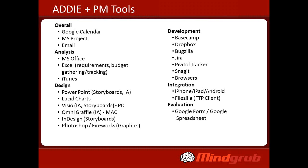You guys probably know the different parts of ADDIE. In the software development world, we use a software development cycle — analysis, information architecture, and design. Graphic design is a separate step. Then development, then implementation if it has to go to a store, and then ongoing support more so than evaluation. But it doesn't really matter — if you're producing a product, you basically go through these same steps whether it's called ADDIE or the software development life cycle. It's really the same steps.